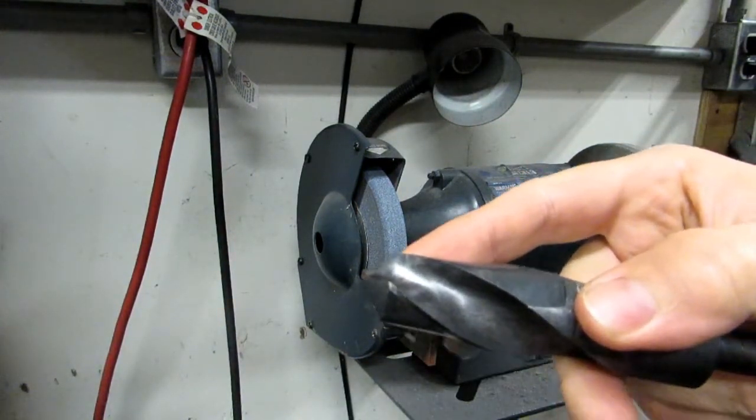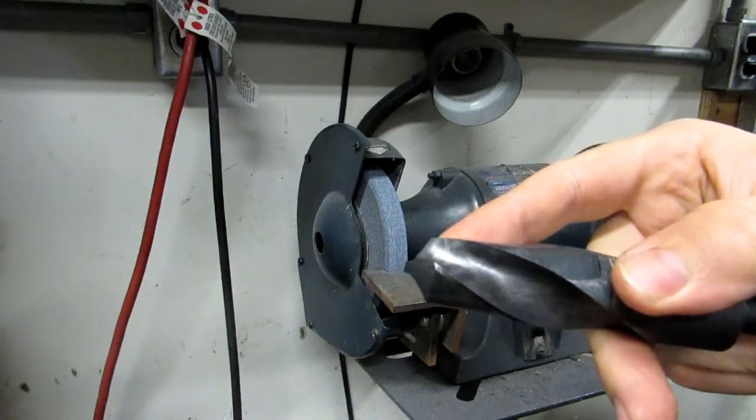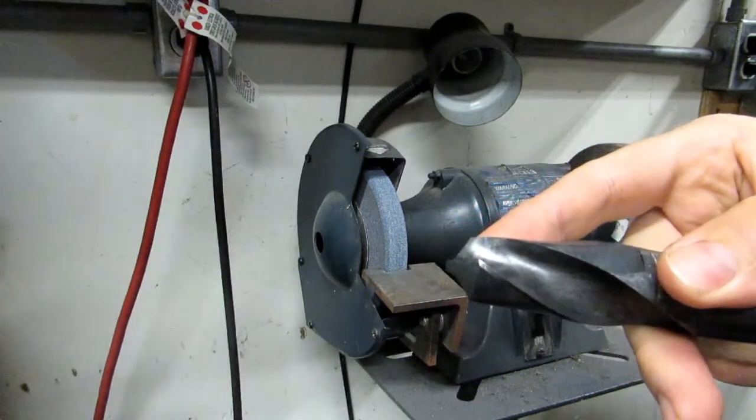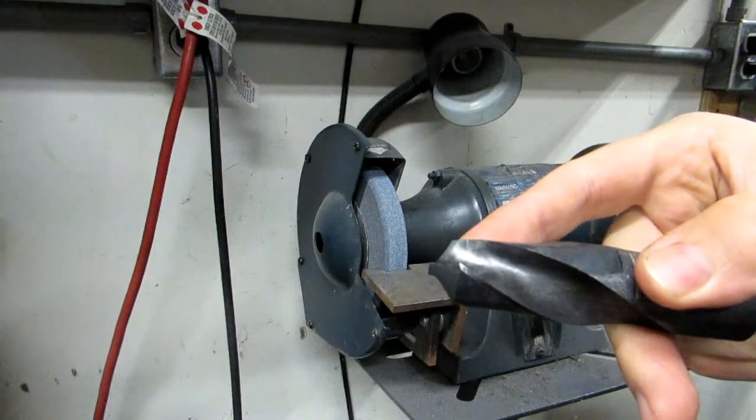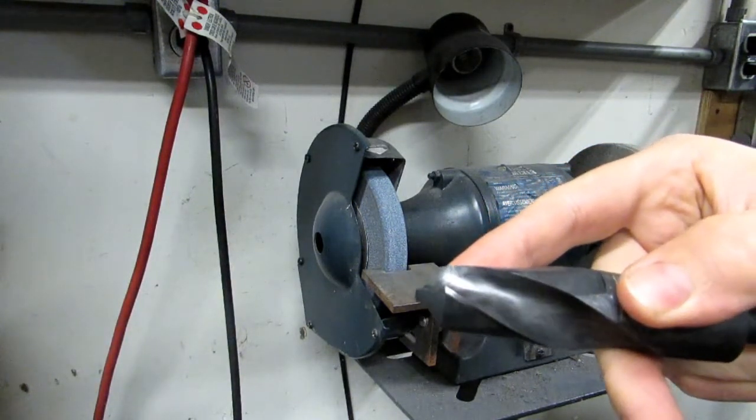then what happens is as the drill starts to break through the backside of the material, it doesn't have any rake angle there. It just kind of plows through it.